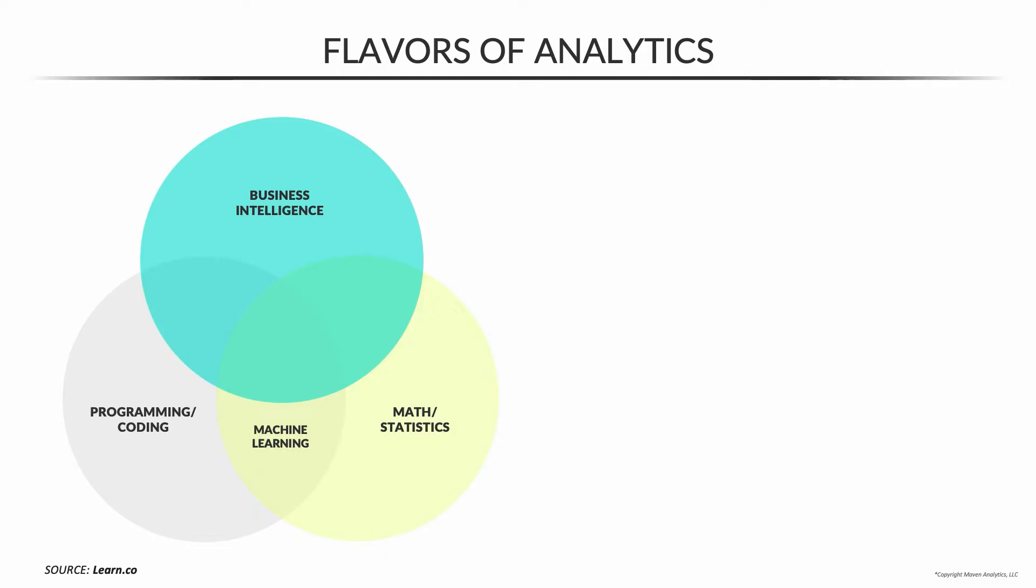People with coding and BI skills might fall into data engineering. BI and math and stats, maybe we call those people advanced analysts, and those who use all three types of skills relatively equally might fall into the data science category.